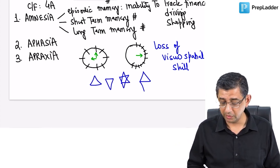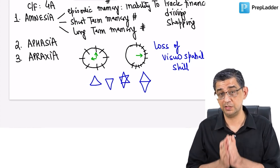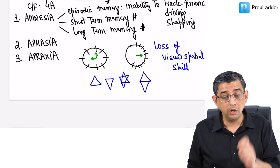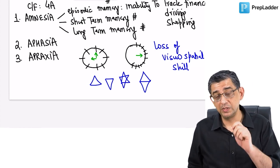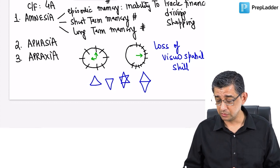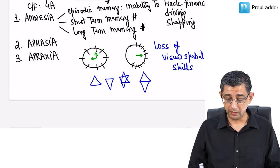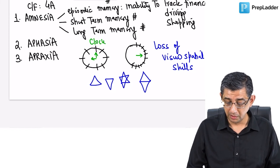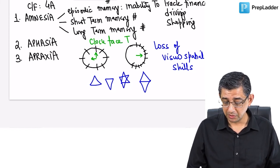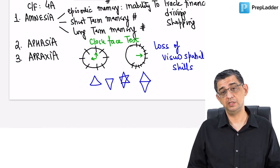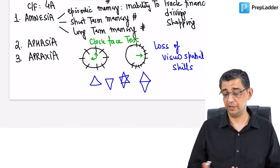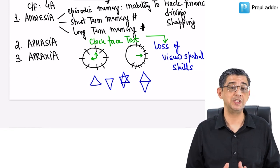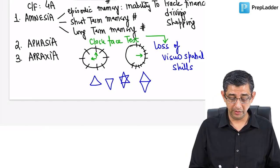In this guy the non-dominant parietal lobe is affected, so visuospatial skills would be lost. The test that I did before you is technically called the clock phase test. It signifies there is a loss of visuospatial skills in an individual, which basically means apraxia, the fourth feature of the disease.